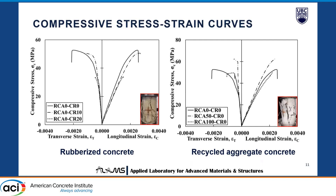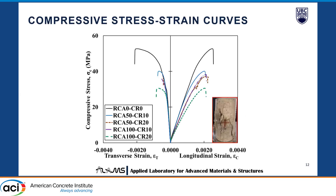These are the compressive stress-strain curves. The left graph shows rubberized concrete mixtures and the right shows recycled aggregate concrete mixtures. For rubberized concrete, the initial slope was similar to conventional concrete, but the modulus of elasticity was slightly lower. Recycled aggregate concrete mixtures had a similar slope to conventional concrete. For rubberized recycled aggregate concrete mixtures, all RRAC mixtures had lower stiffness than the control concrete, and the slope decreased with increasing RCA and crumb rubber replacement levels.